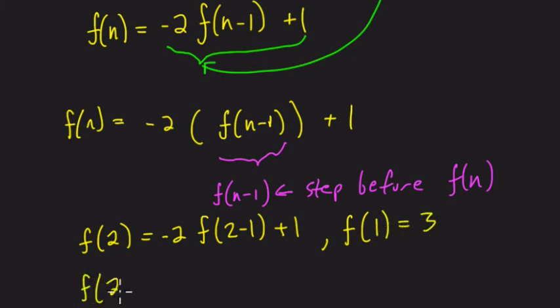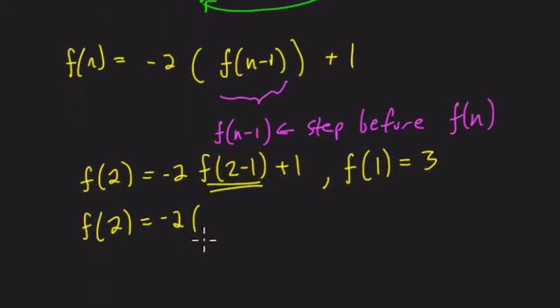f of 2 equals negative 2 times this is f of 1, right? Because 2 minus 1 is 1, and we know f of 1 equals 3, so plug that in, and then we add 1 to it. So f of 2 would equal negative 6 plus 1, which is negative 5.